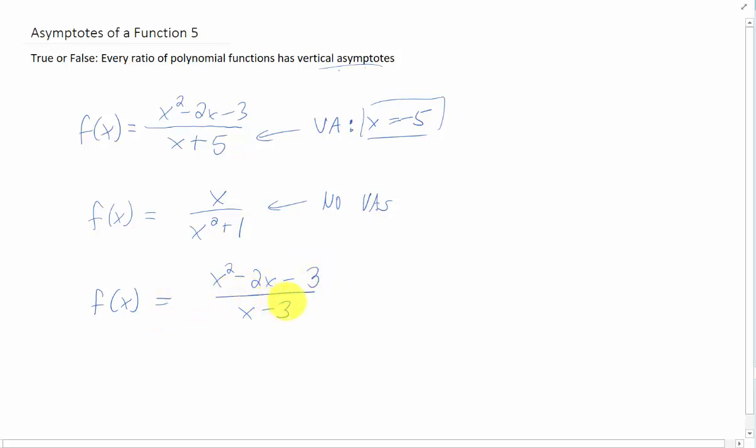Take this rational function for example. It sure looks like there is a vertical asymptote at x equals 3. But what you'll notice if you plug in x equals 3 to the numerator, you also get zero. So what you'd have to do to investigate this function further is you'd have to factor the numerator and you would cancel the factors of x minus 3.